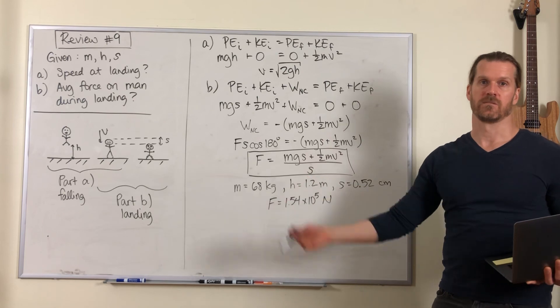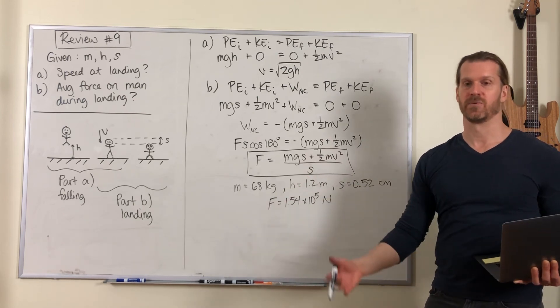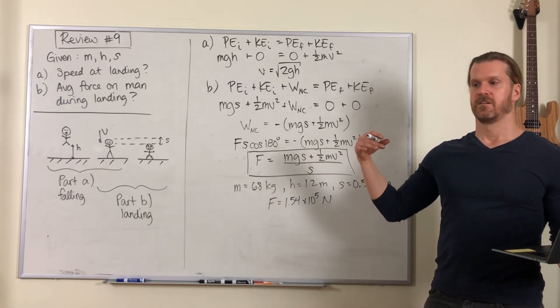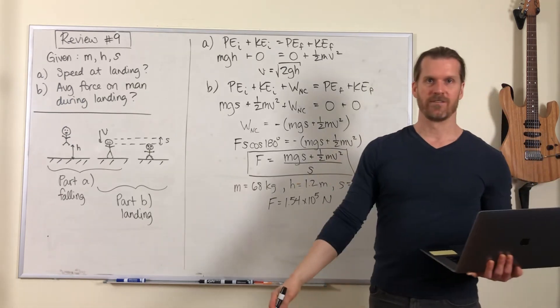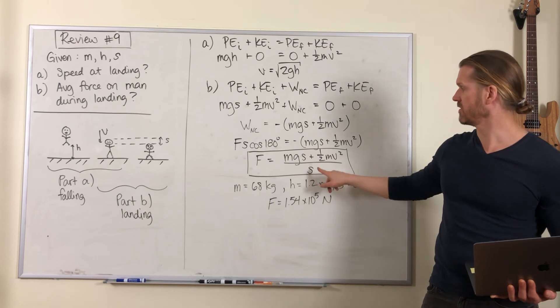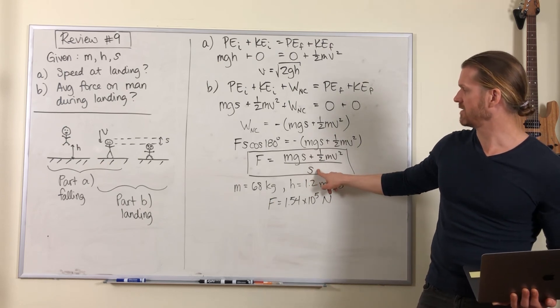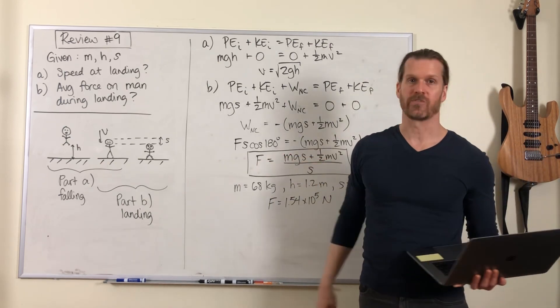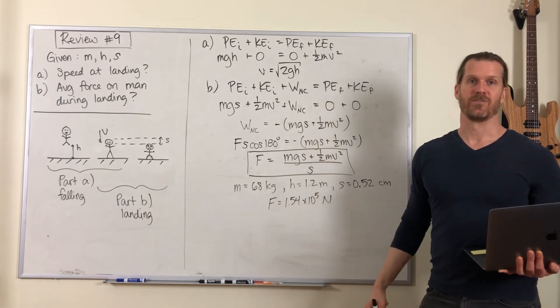They can spread the landing force out over a large distance. You might see a parkour athlete jump off a building and roll on the ground. The reason they do that is to make this s value as large as possible, because when s is big then this force gets smaller and so they don't break themselves.